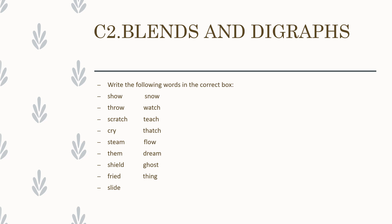Just decide carefully and take one more minute to write in the correct box. Everyone should have these words in at least one box, and a few words in both boxes. Now let us check: 'Show' — SH together gives one sound, so it is a digraph. Show should come in the box where you have digraphs.